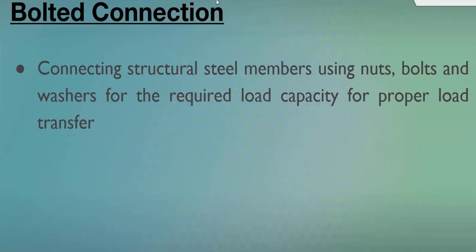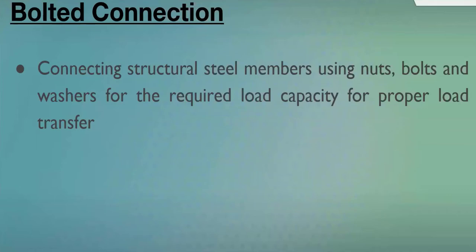For connecting structural steel members we need something — we cannot just glue them. There are two or three major connection types: the first is riveted connection, which is now obsolete; the second is bolted connection, which is what we are covering in this webinar; and the third is welded connection. Bolted connection uses nuts, bolts, and washers to connect structural steel members so that load is properly transferred from the top down to the foundation.